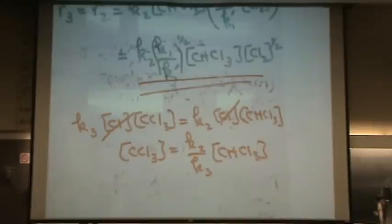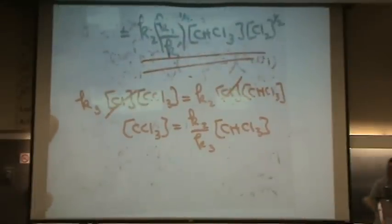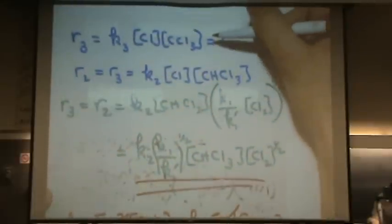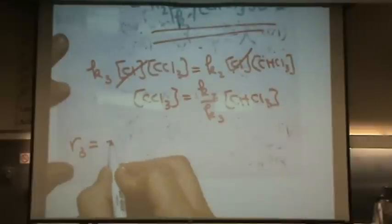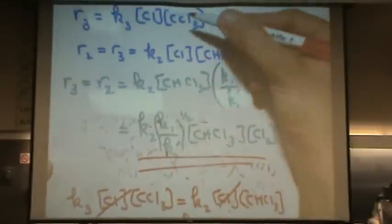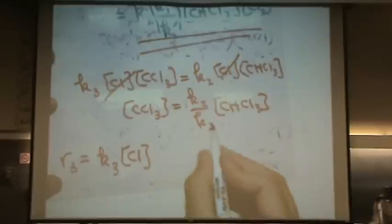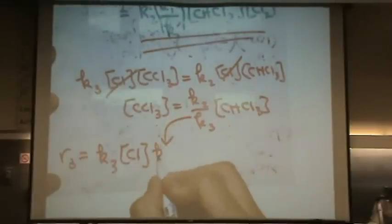Okay. Let's plug that back in now to R3, our answer, right? R3, and for me it's on the top of the page, so look in your notes, is K3 times, I'm going to plug, I'll keep Cl here for a second, Cl times CCl3, which is this. K2 over K3 CHCl3.